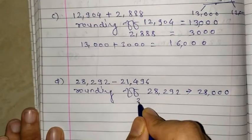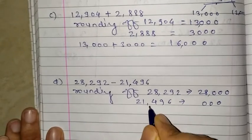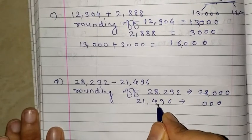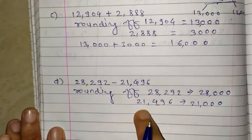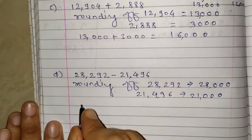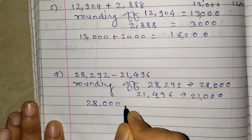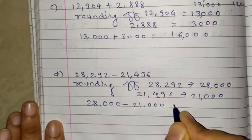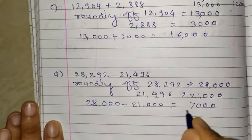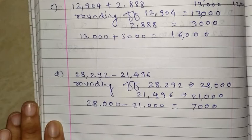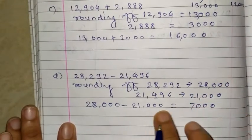Next number 21,496. Give 3 zeros. Here 4 is there, 4 means as it is, you write 21. So this number is closer to 21,000. Then finally you do 28,000 minus 21,000. 3 zeros as it is, 8 minus 1 is 7. So our answer is 7000. In this way you can easily solve the rounding of examples.